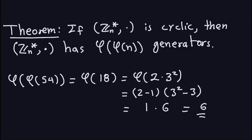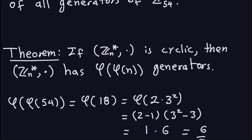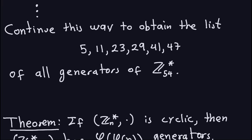Hello and welcome again. In the previous video we discussed the group Z_n* where the dot is multiplication modulo n. We talked about how this collection is a group, when it is cyclic, and how to check if some number is a generator. Now I'm going to talk about the number of generators. Let me go back to the example from the previous video — we were looking for all the generators of Z54* and ended up with this list of six generators.